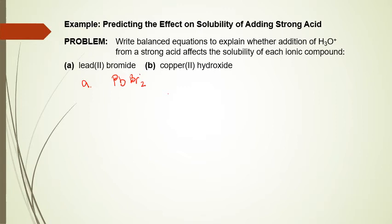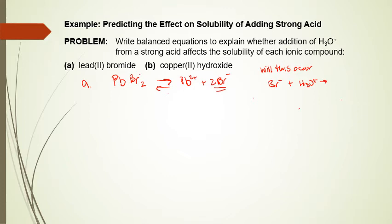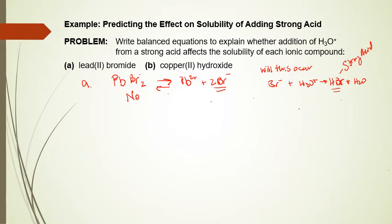For lead(II) bromide, PbBr2(s) → Pb²⁺ + 2Br⁻. The possible reaction: Br⁻ + H3O⁺ → HBr + H2O. However, since HBr is a strong acid, its anion is not strong enough to pull a hydrogen from water. Therefore, the addition of H3O⁺ will have no effect on solubility because we already have an acidic salt.